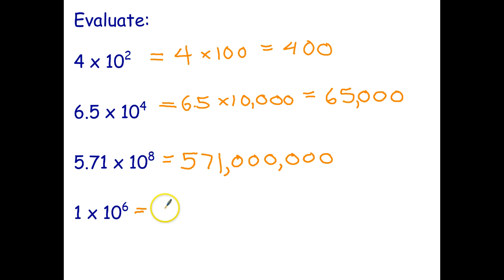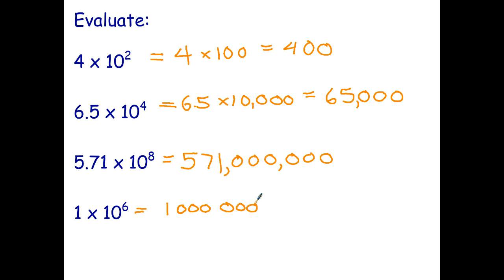And finally, the last one is 1 times 10 to the power of 6. Well, 10 to the power of 6 is just a million, so that's going to be just a million. So from what you already know about arithmetic, you can already write numbers in scientific notation as ordinary numbers.